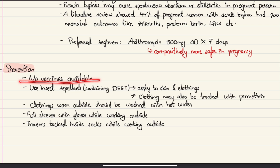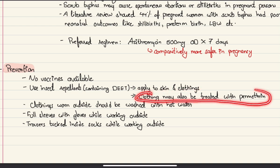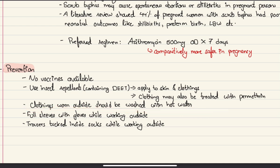For prevention of scrub typhus, no vaccines are currently available. Use insect repellents containing DEET on skin or clothing while walking outside. Permethrin can be applied to clothing as an alternative. Clothes exposed outdoors can also be washed with hot water to free them from mites. Wear full-sleeve upper body clothing with gloves while outdoors, and tuck trouser legs inside socks when walking in potentially exposed areas.